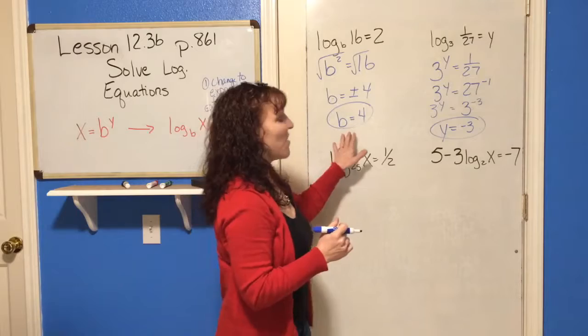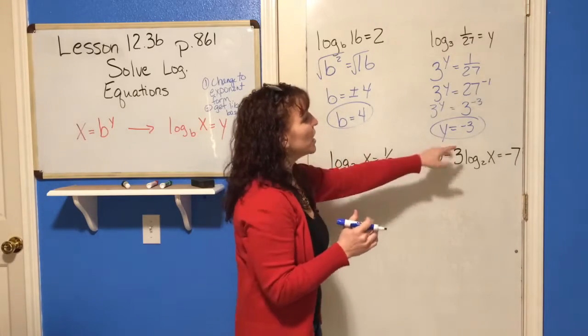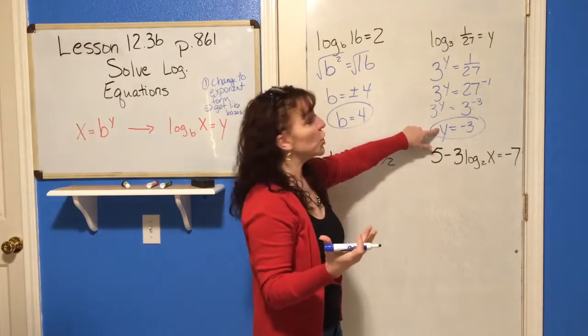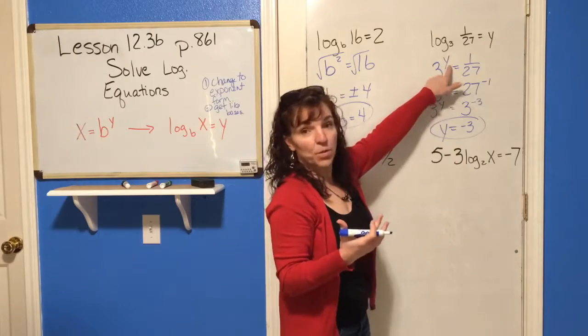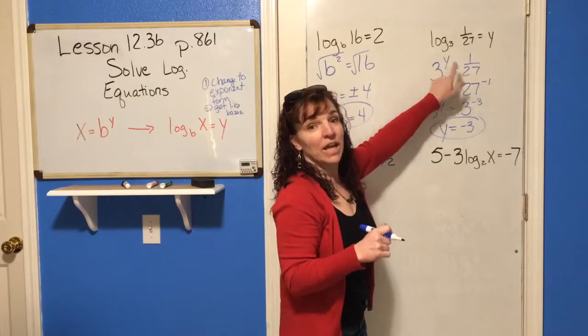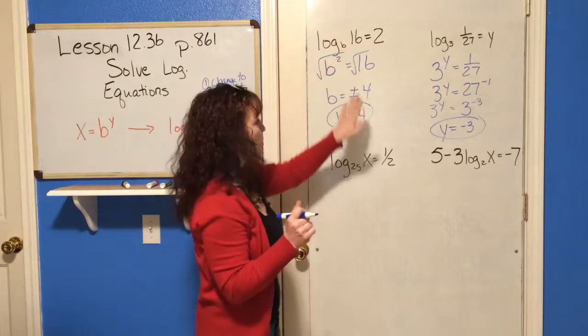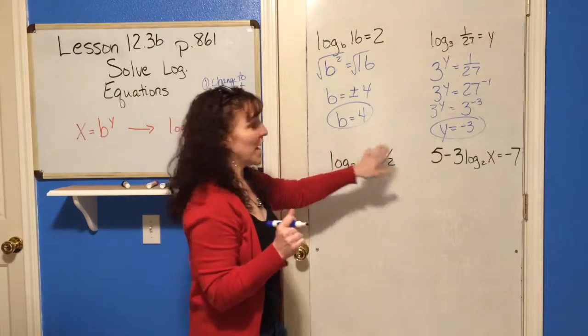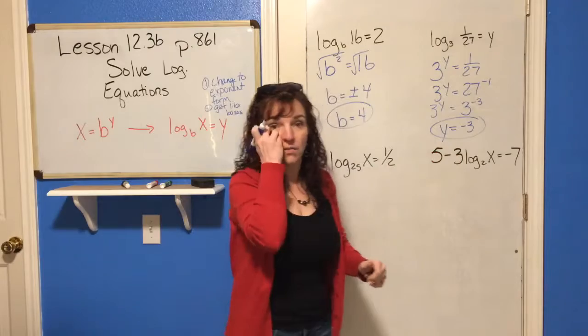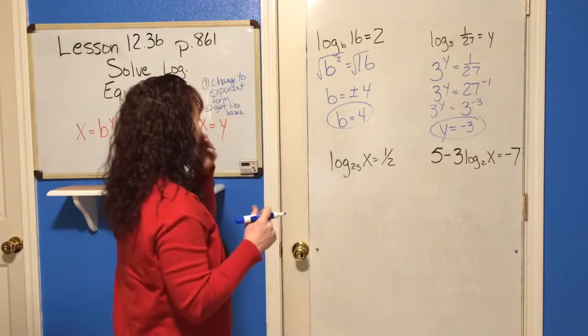Now, you might say, oh, but we couldn't have a negative before. The difference here is what the unknown that we were looking for in this case was the exponent. An exponent can be negative. The base of a log cannot be negative. So that's why this one could not be negative, but this answer can be negative. Well, let's do another one.